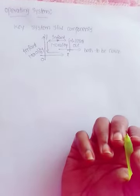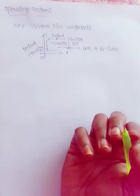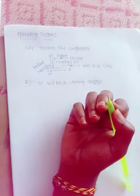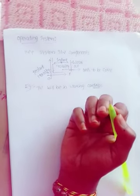For example, TV will be in working condition when all 20 components are in working condition. Custom build can be used. It will provide feasibility.